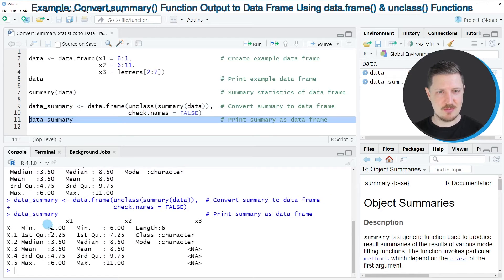And then you can see that we have created a new data frame which contains the same column names as our input data frame: x1, x2, and x3. However, this time our data frame contains the summary statistics information that was created by the summary function for each of our columns.